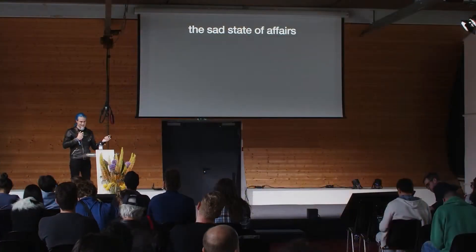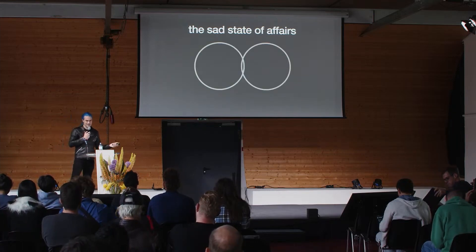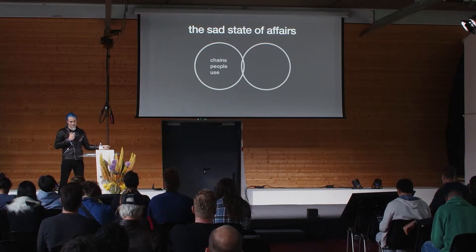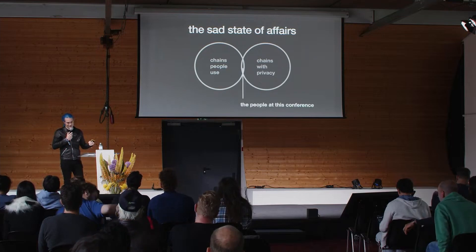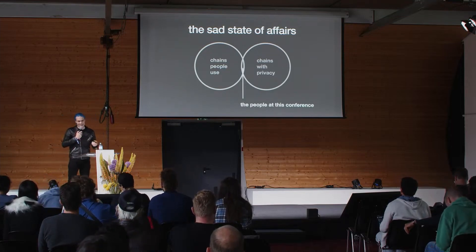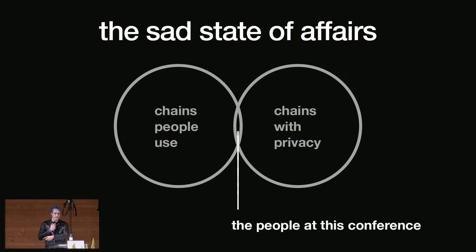To start off, this is sort of a little bit of a joke, but also a little bit real. We have this somewhat sad state of affairs: if we imagine a Venn diagram where one part is chains that people use and the other part is chains with privacy, it's almost two separate circles and the intersection is basically the people at this conference. I say this as somebody who's spent the last five years trying to build privacy infrastructure. I don't think this is because of lack of trying — it's just a very hard problem. A lot of the most successful deployments of ZK so far have been on the scalability side rather than the privacy side, which points to some kind of issue of how we're thinking about this.